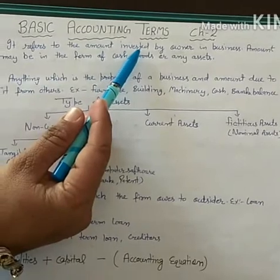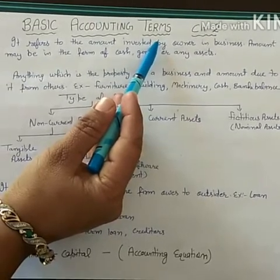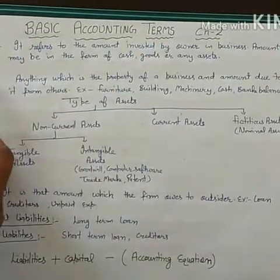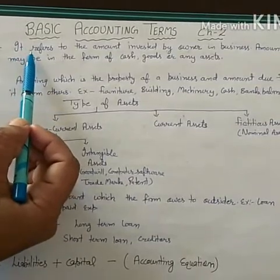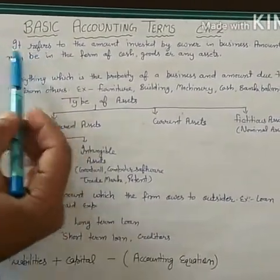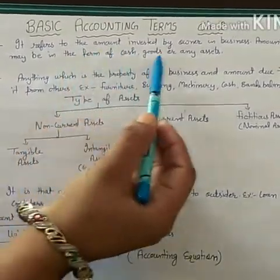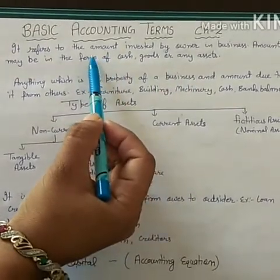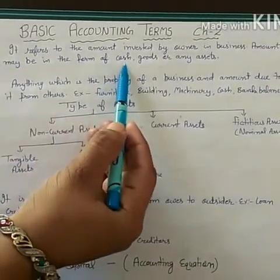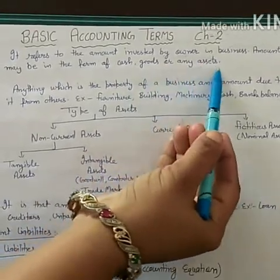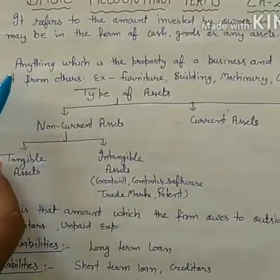In Accounts, there are some basic words that have different meanings from general usage. The first is Capital. In general meaning, Capital means Rajdhani, but in Accounts, Capital means the amount invested by the owner in the business. It can be in the form of cash, goods, or any assets. Capital invested by the owner is known as Capital.